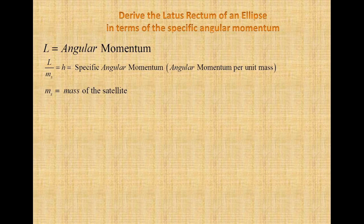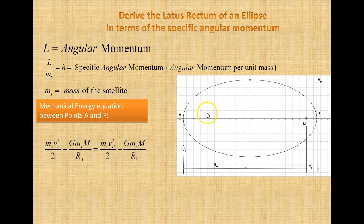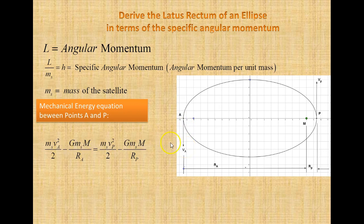We're going to use the mass of the satellite. Here's our ellipse, and we want the mechanical energy between points A and P. A is the apoapsis — the furthest point from the mass we're orbiting. P is the periapsis — the closest point on the ellipse about the mass we're orbiting. For our mechanical energy between points A and P, we've got one-half the mass of the satellite times velocity squared at A, where VA is perpendicular to the semi-major axis, minus G times the mass of the satellite times the mass of the planet divided by the distance Ra.